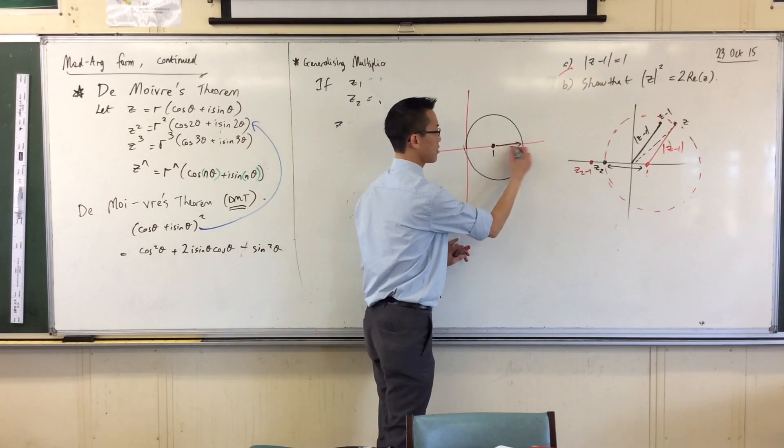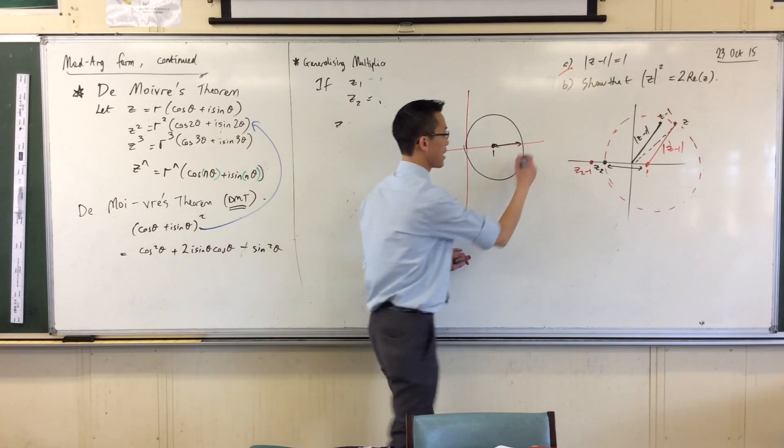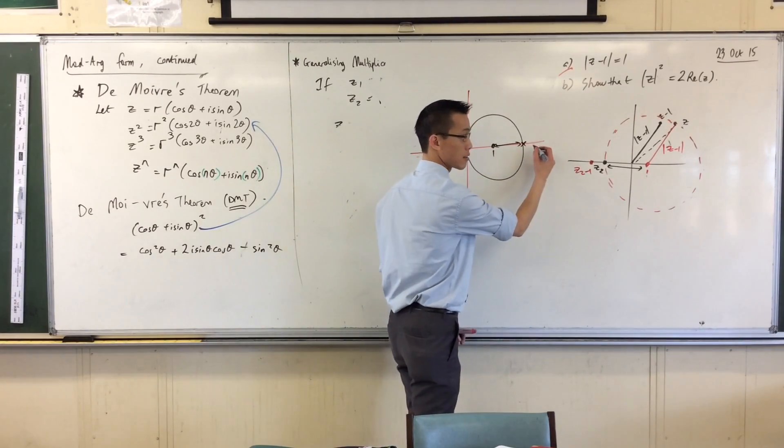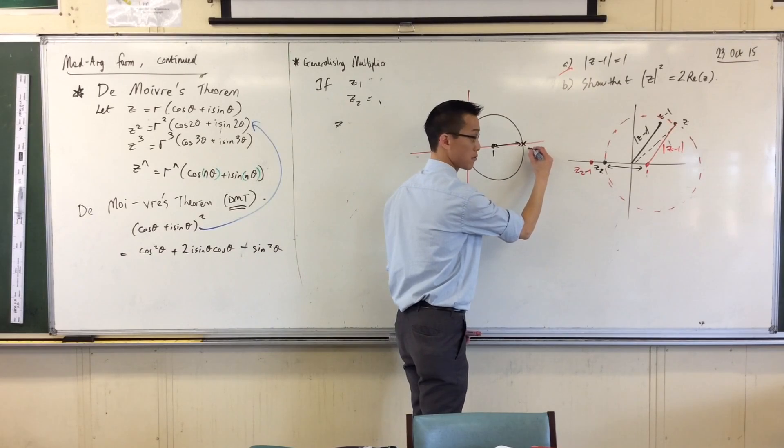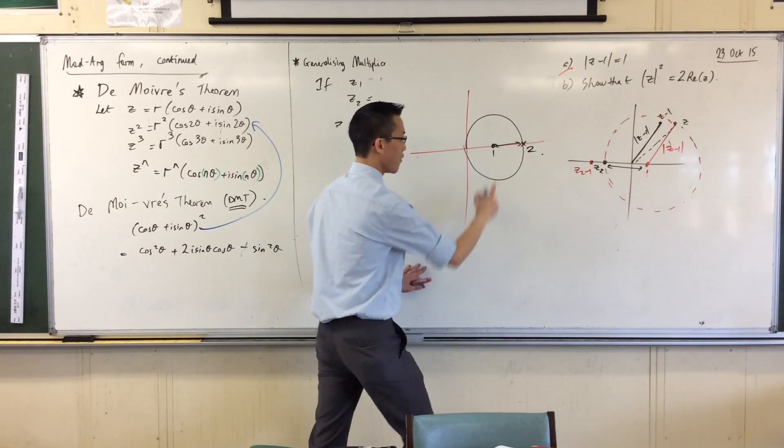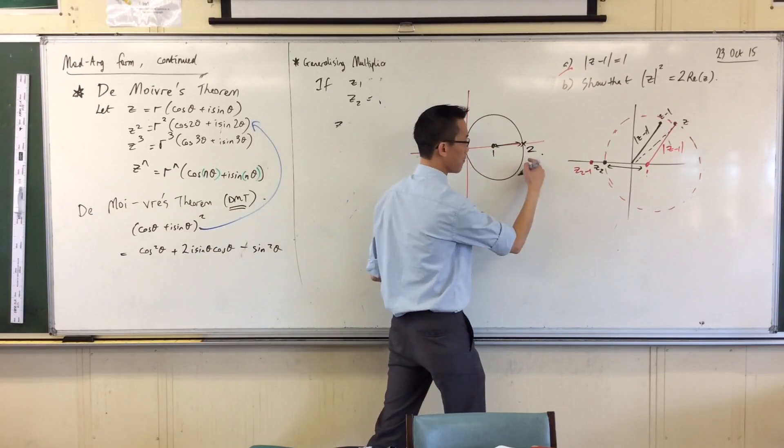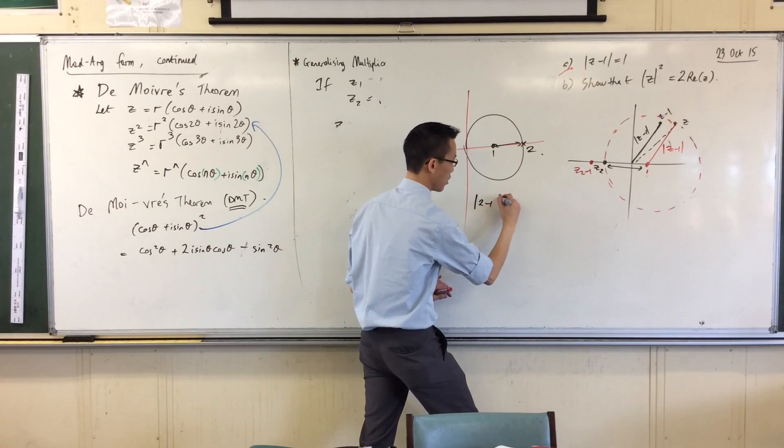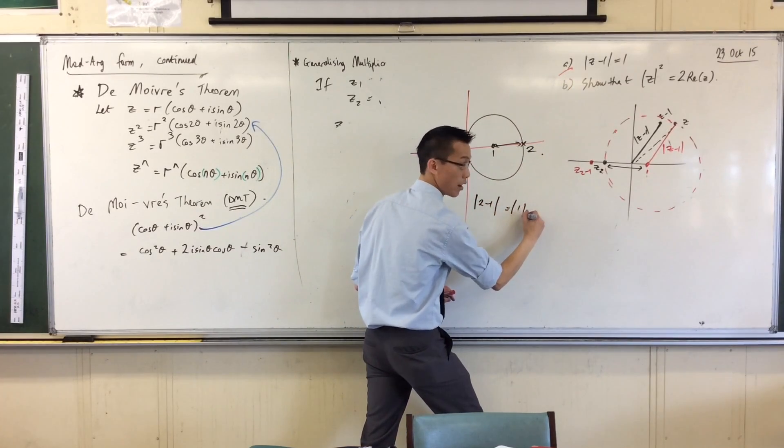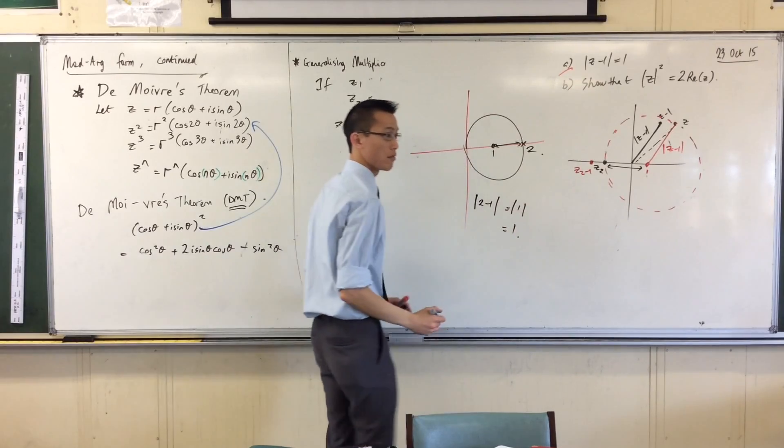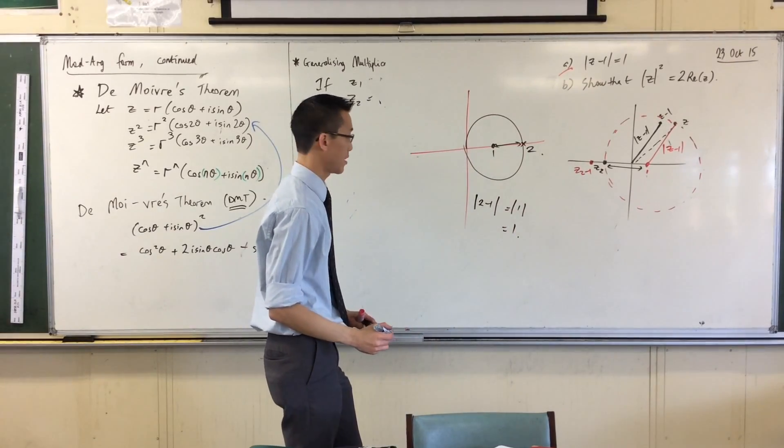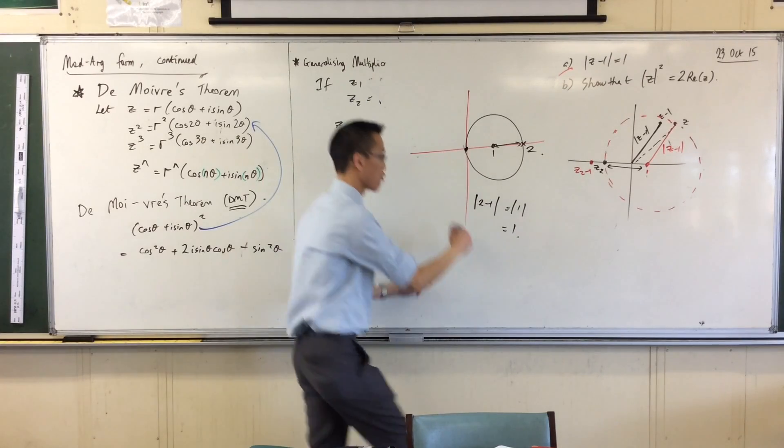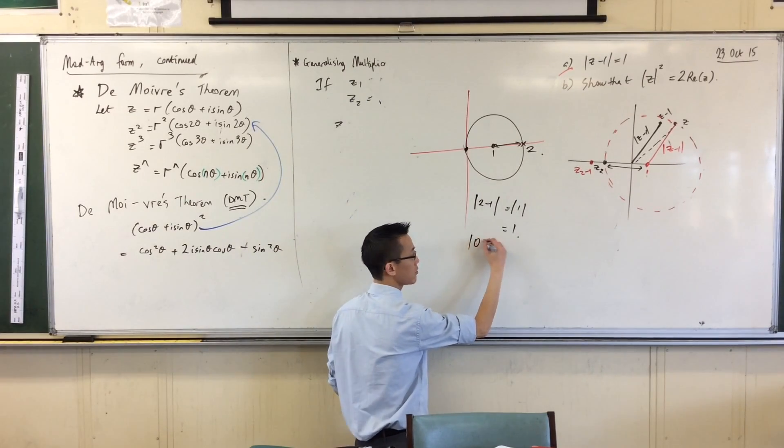But now you can see, now think about anywhere on here. I know what the radius of this circle is. For that point there, I actually know exactly what its coordinates are. It's 2. So for that point, let's test it out. The modulus of 2 minus 1 which is the modulus of 1, which is 1. How about this point? I know this point on the circle as well. That's 0. So I'll test that out. The modulus of 0 minus 1 is the modulus of minus 1, which is 1.